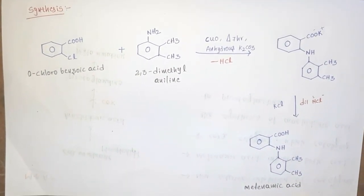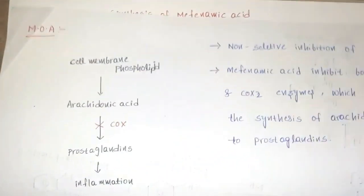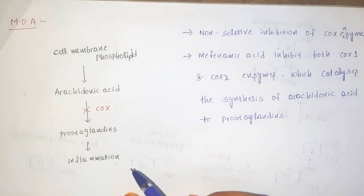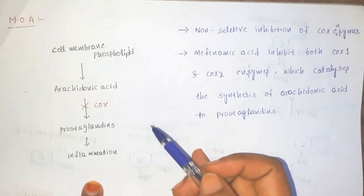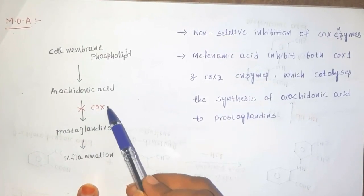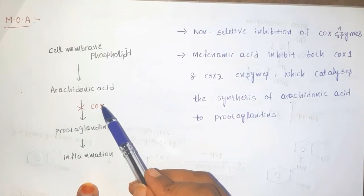Next, mechanism of action. So mefenamic acid is non-selective COX inhibitor. So it directly inhibits the COX enzymes, that is both COX-1 and COX-2, and inhibits the synthesis of arachidonic acid to prostaglandin conversion.